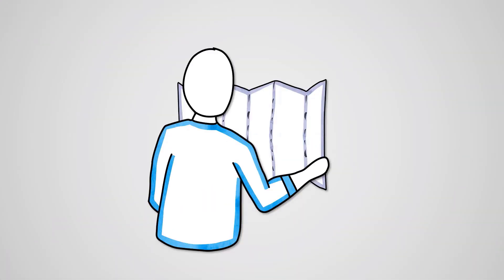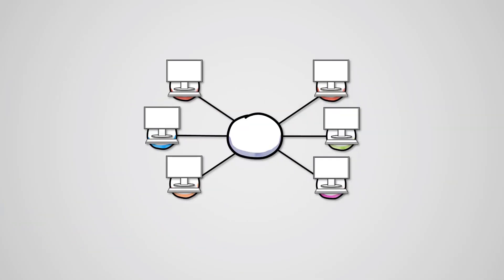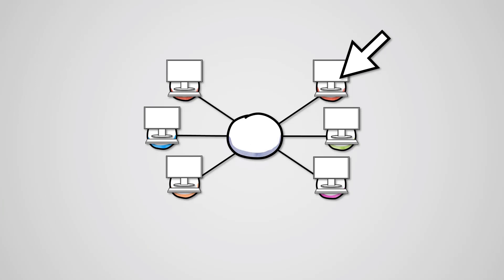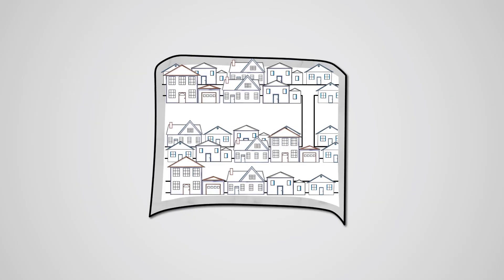A network topology is basically a map of your network. It shows how the devices on your network are connected together. It's kind of like a street map of a town with roads connecting houses. Another way it's like a street map is that traffic can only flow in certain ways.